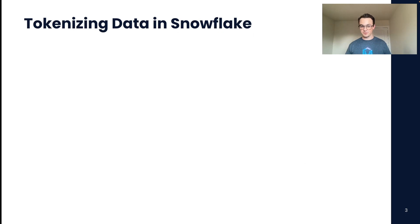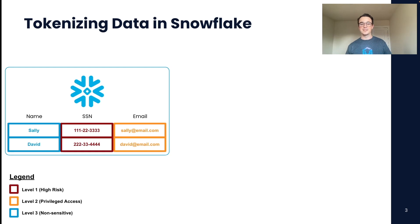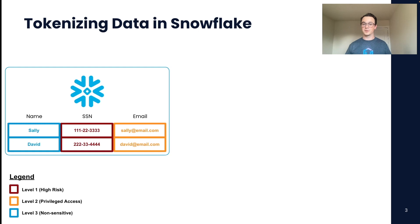So, how does this work with Snowflake? Here I have an example of a table that would be in your Snowflake environment that has multiple columns, all with their different risk profiles. We have first name, which we're calling level 3 because it's non-sensitive, so anybody can get access to this data. Next, we have social security number, which is high risk, because if somebody got access to this data, they could steal that person's identity. And finally, we have email address, which we're considering level 2 data because some people in your business will need access to this to contact that customer, but other people in your business won't need access to that information at all.